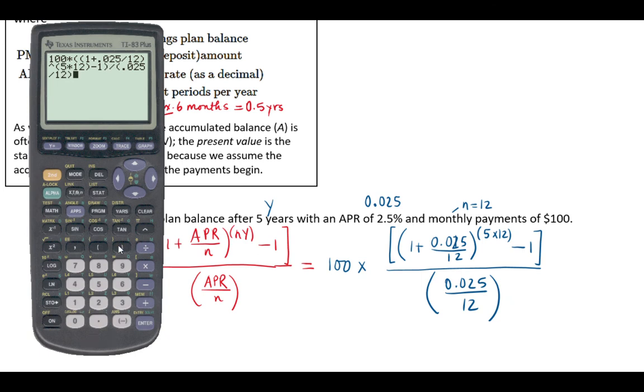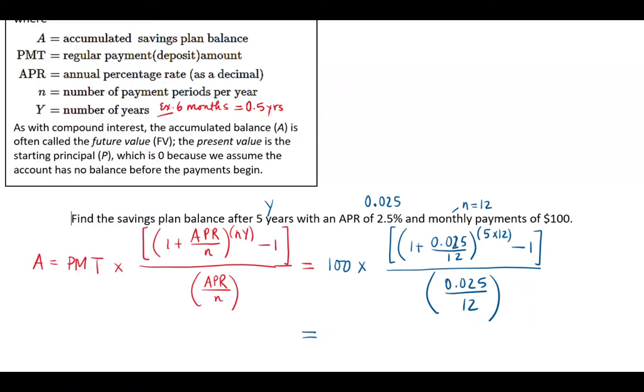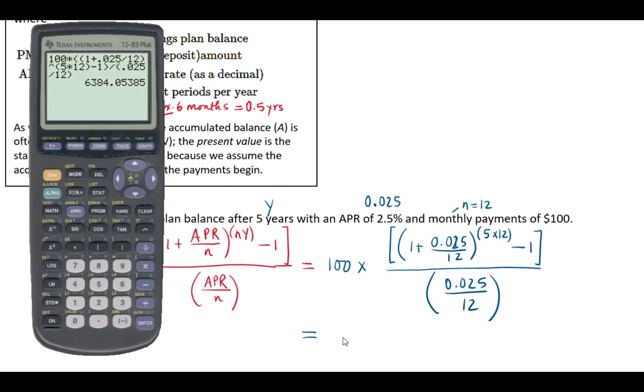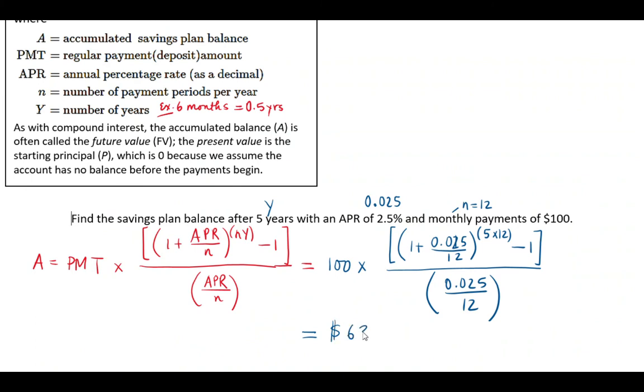And then I have the division, so I divide it, and then open the parentheses. I have 0.025 and then divide it by 12, and then close the parentheses. As you can see here, I simply typed in the formula. I didn't do anything special, I just typed whatever I see in the formula. Then I hit enter and I get the answer. So the balance after five years will be $6,384.05.